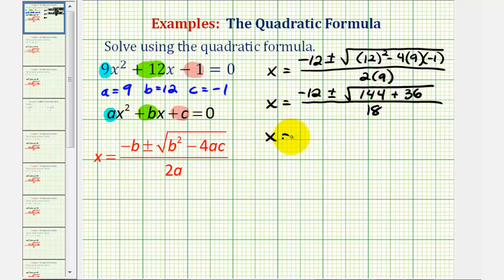So now we have x equals negative twelve, plus or minus the square root of one hundred forty-four plus thirty-six is equal to one hundred eighty. Now we want to simplify the square root of one hundred eighty. To do this, we're going to find the prime factorization of one hundred eighty, so that we can find the perfect square factors of one hundred eighty.